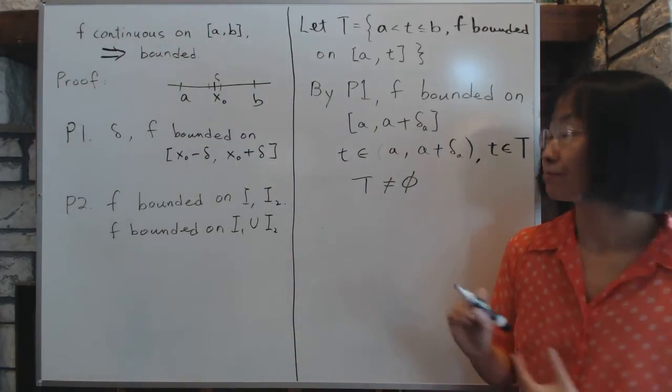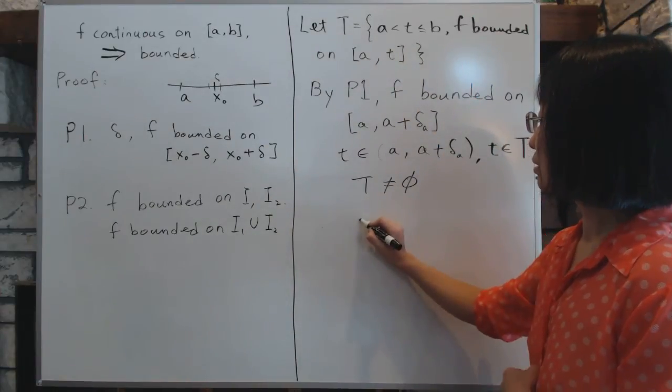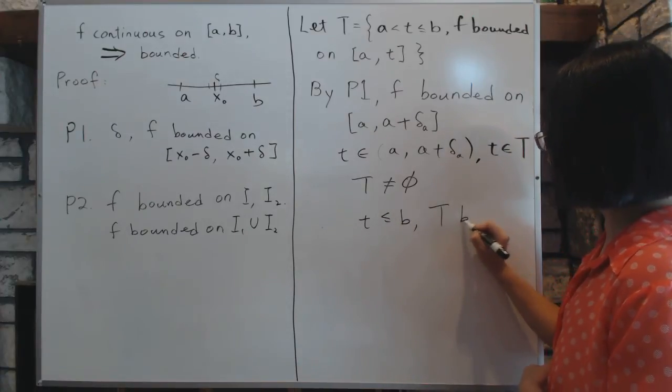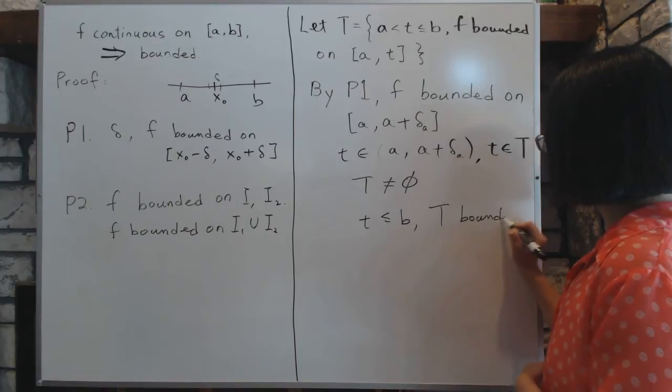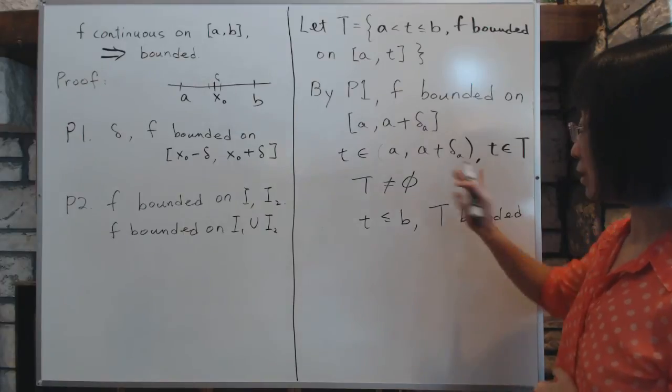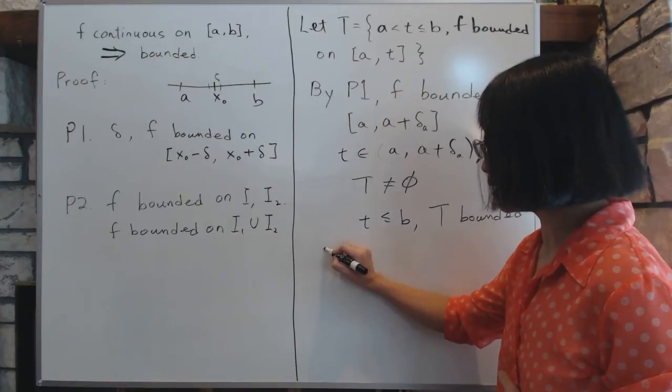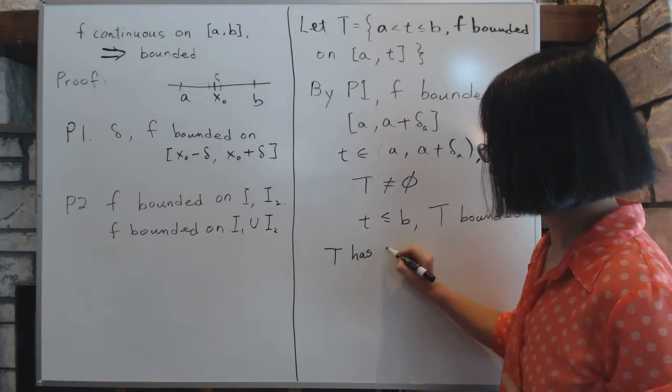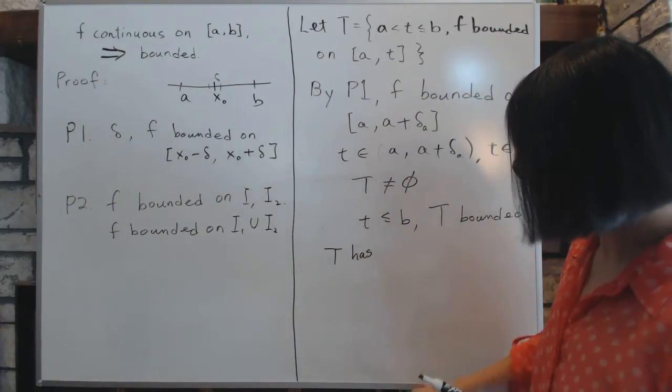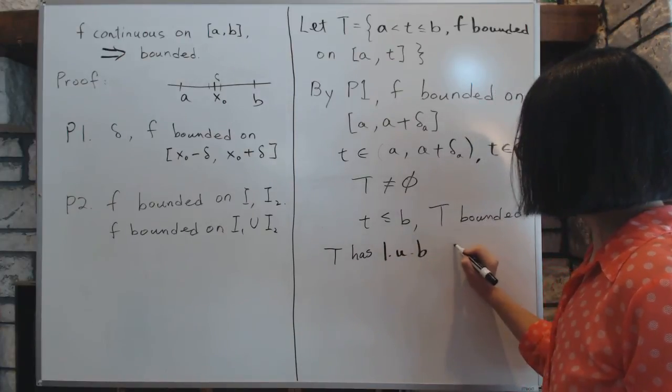So T has members. The next thing is we notice that since t is less than or equal to b, the set T is bounded from above. That's just by definition, we defined t to be all numbers that has to be less than b. So because T is not empty and it's bounded from above, it has a least upper bound. And we will just call the least upper bound c.